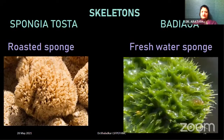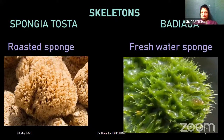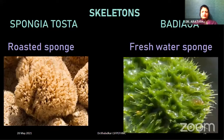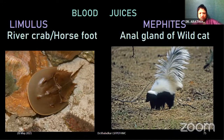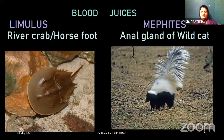Next, skeletons — of two types: roasted and fresh. For the roasted type, we have the example of Spongia tosta, and in fresh water we have Badiaga. Next, secretions in the form of blood and juices. There is a crab called the river crab or horse foot crab — zoological name Limulus. Its shape looks just like a horse foot, and therefore it is called the horse foot crab. Next, Mephitis — prepared from the anal gland of the wild cat, also called skunk.